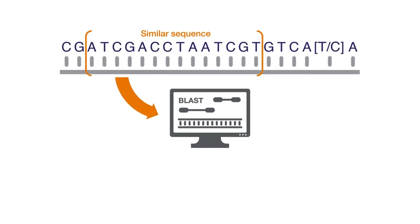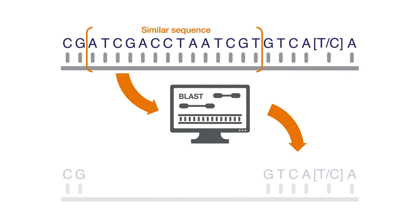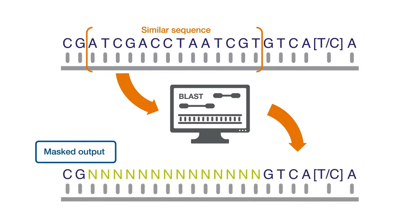If you find any sequences that are similar, you should mask those regions with Ns. This will ensure that your assay is only detecting the target region that contains your SNP of interest. You don't want to detect other regions in the genome.